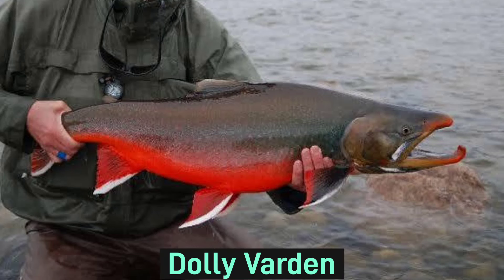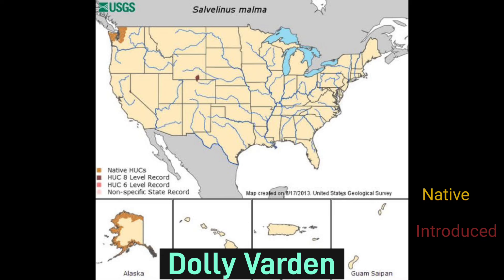Also members of the char family, Dolly Varden are one of the most northerly fish on this list. Dolly Varden are also anadromous. You can find them in the far northwestern corner of Washington, as well as much of Alaska and Canada.